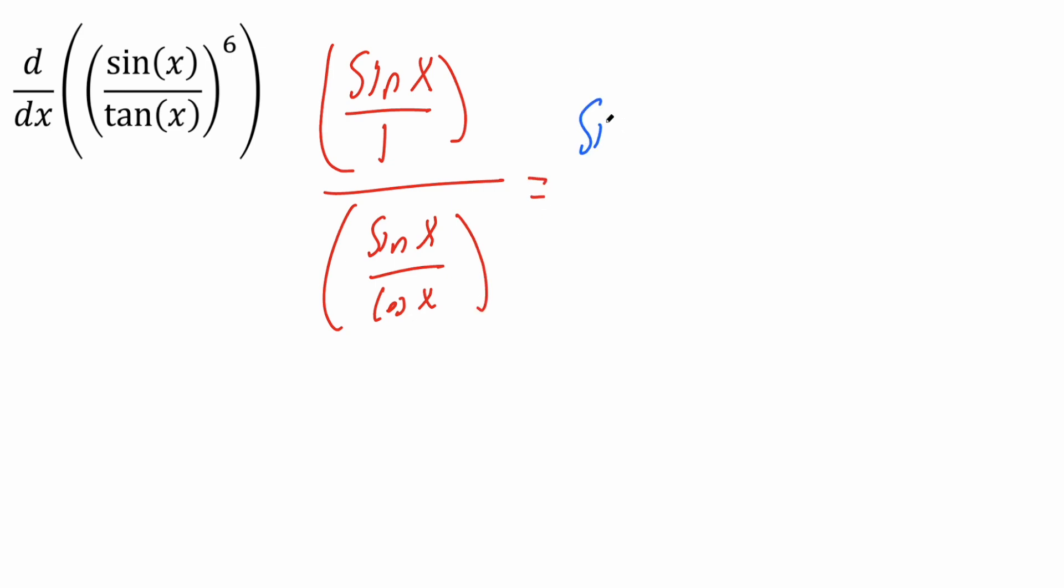So let's rewrite this: we have sine x divided by one. Instead of dividing you could multiply if you flip these two. So cosine x would be on the top and sine x would be on the bottom. And by doing this sine x cancels and we just get cosine x. So this piece right here is just cosine x.